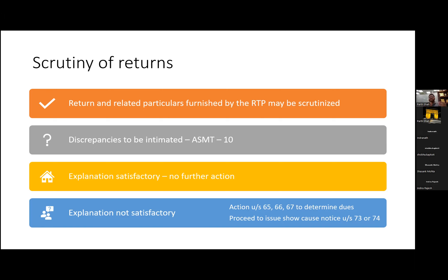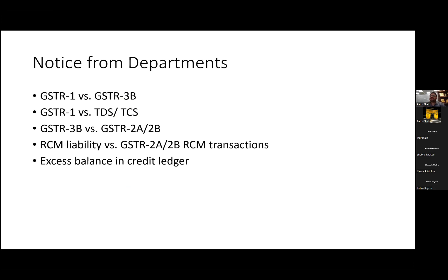Among the most common scrutiny notices seen over the last two years is the GSTR-1 versus GSTR-3B mismatch notice. For example, if your GSTR-1 shows turnover of Rs. 100 but GSTR-3B shows only Rs. 90, the department starts noticing that you have shown less turnover in GSTR-3B, which means you have paid less tax. This is flagged as a discrepancy and you are asked to explain. When explaining, clients sometimes mention ITC reversals or other reasons.